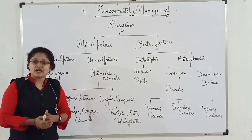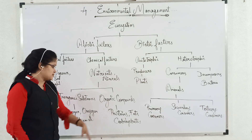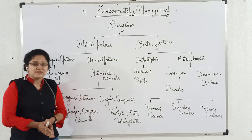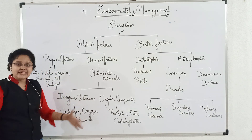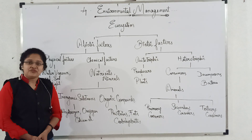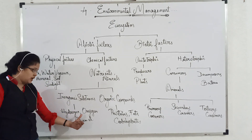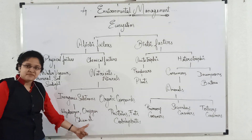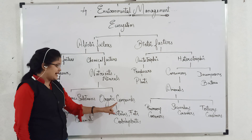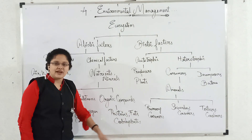Now we will see the chemical factors: nutrients and minerals, which are further classified into inorganic substances and organic substances. The substances obtained from living organisms are called organic compounds, and the substances not obtained from living organisms are called inorganic substances. Examples of inorganic substances are hydrogen, oxygen, calcium, etc. Examples of organic compounds are proteins, fats, carbohydrates, etc.